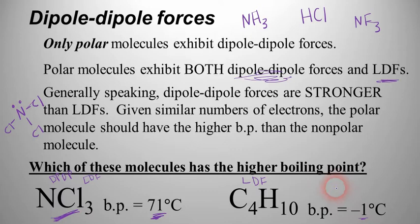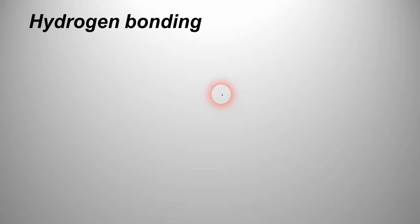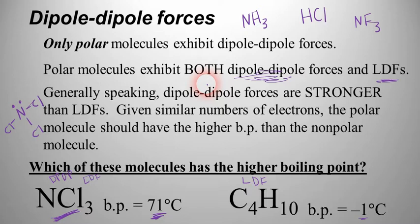That brings us to the end of this discussion. In our next video we're going to talk about hydrogen bonding and another type of force as well. Hopefully at this point you're able to differentiate between London dispersion forces and dipole-dipole forces, decide which molecules have each type of force, and compare boiling points and melting points for these molecules. If you learned something, please subscribe to my channel and give the video a thumbs up. Hope to see you in the next video.